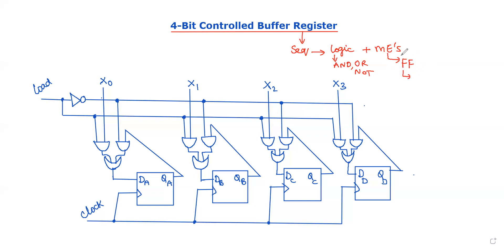To design a sequential circuit like a register, we require flip-flops and logic gates. For a 4-bit register, four flip-flops are required. The reason is that one flip-flop can store only one single bit at a time. So to store four bits of data, it requires four flip-flops.